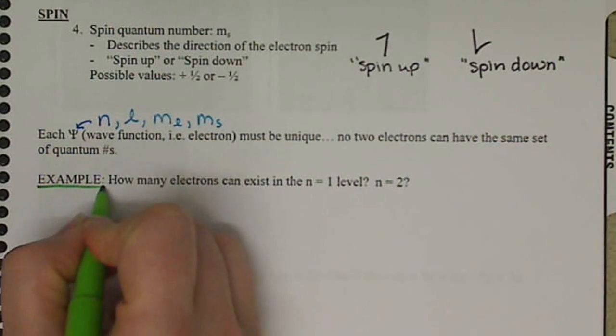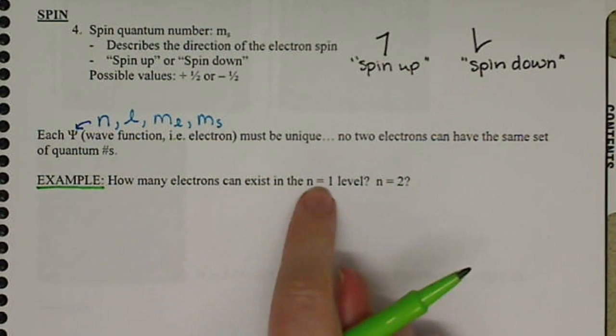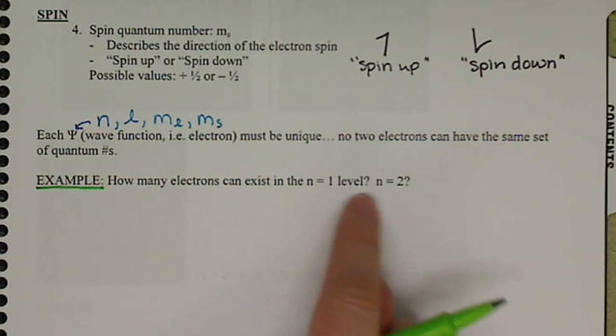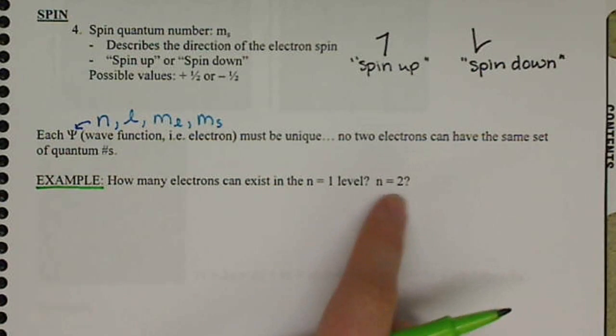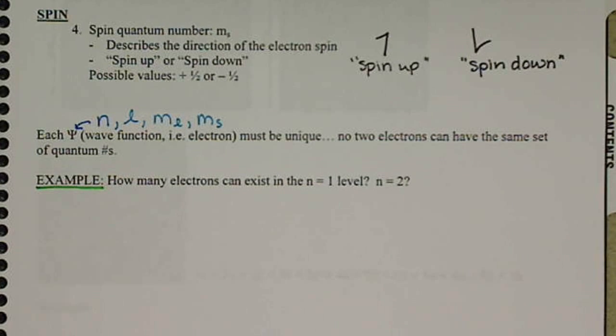In an example here, let's look at how many electrons can exist in the N equals 1 level, and then we'll look at the N equals 2 level. And we'll see once we make that jump, once we go from N equals 1 to N equals 2, our lives get a little bit more complicated very quickly.